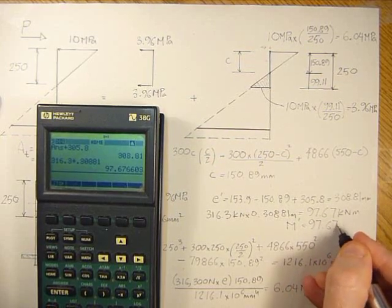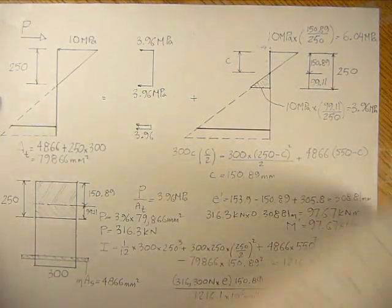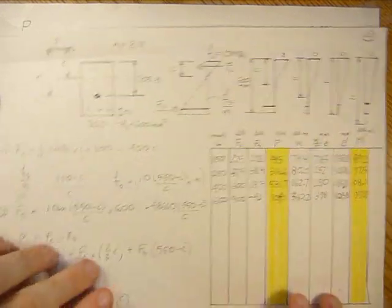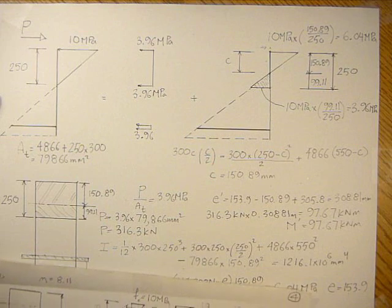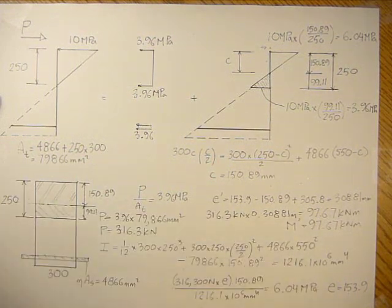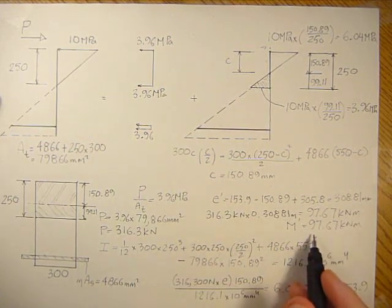I'm just going to go back to how we did the force method. Let's see what M prime was - 97.5 versus 97.67, it's very close. Just some kind of rounding error there. So we have the axial load and the moment now, and that's the way to solve using the M over I approach.